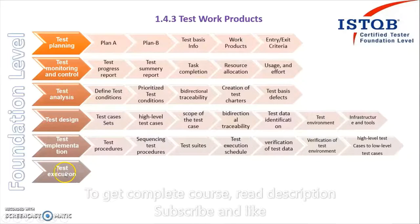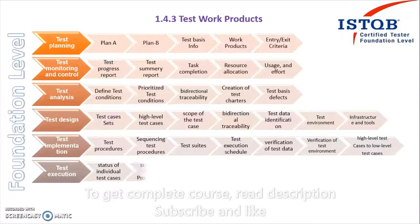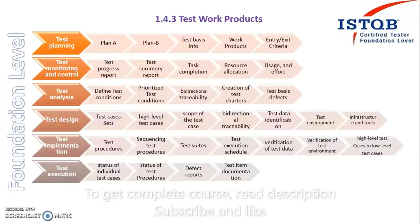Next comes the test execution phase, where we actually check the software. The work products include the status of individual test cases — whether each passed or failed, and if failed, analysis is done. We also track the status of each step in the test procedure. If there is any failure, we raise a defect report. Test item documentation is also required — anomaly reports for defects found, and a list of all items used during execution.